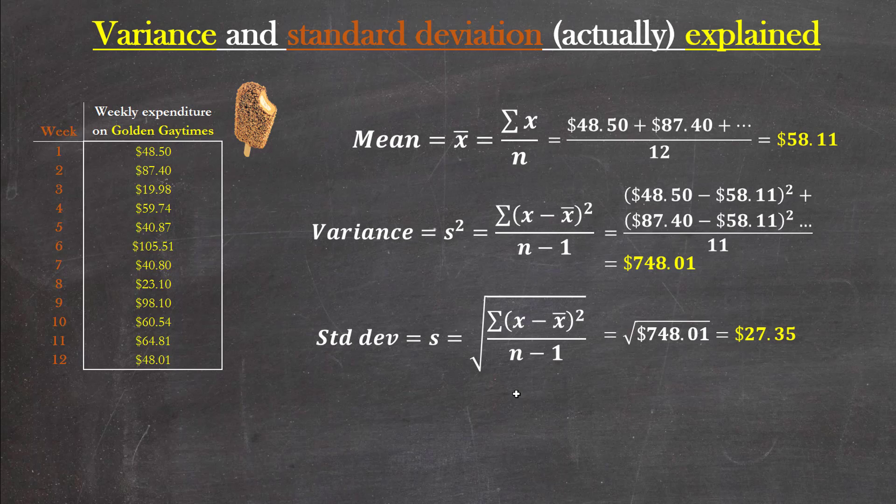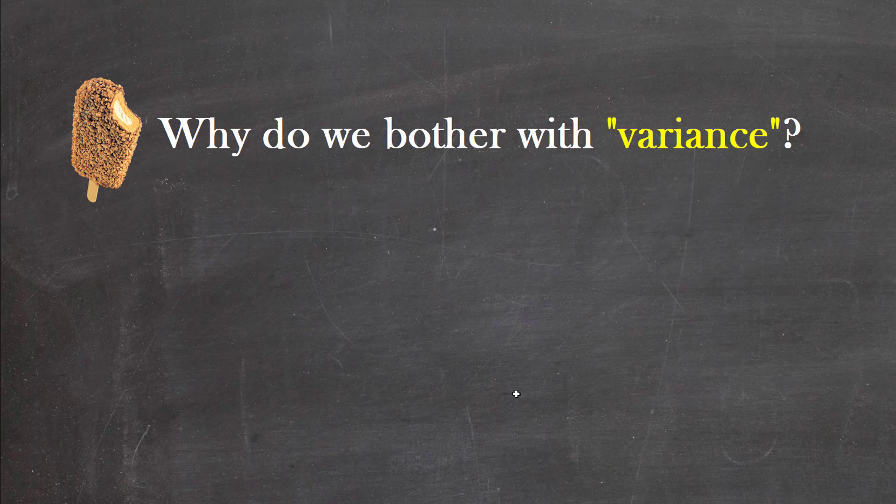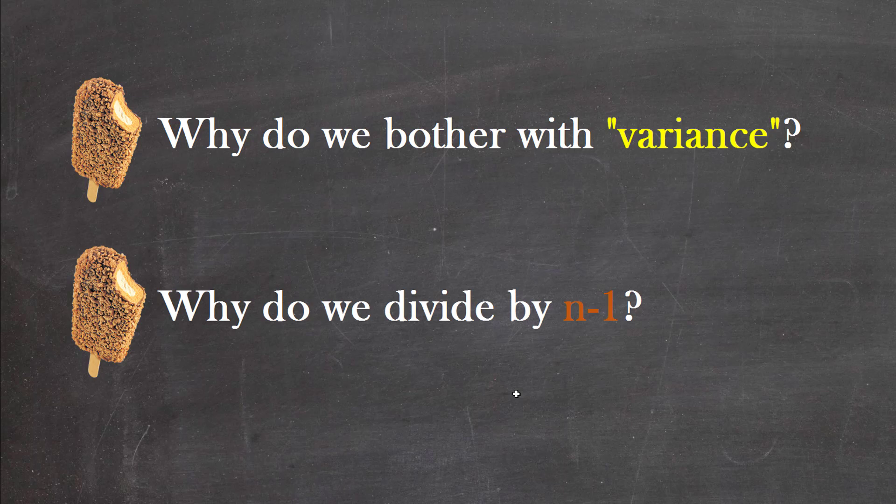Most of you would be comfortable calculating these two things, but I will guarantee you there'll be two questions that get asked. The first is why do we bother at all with using this variance term? You heard me mention it's difficult to assess whether it's high or low because it's squared, so why bother with it at all? And the second question is why we divide by n minus 1 for the variance calculation and therefore also the standard deviation. I'm going to try to deal with both of these commonly asked questions right now.